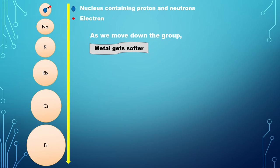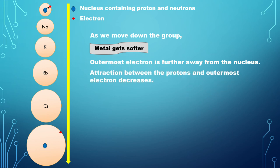as we move down the group, the outermost electron is further away from the nucleus. The attraction between the protons and the valence electron becomes weaker as the atom size increases.